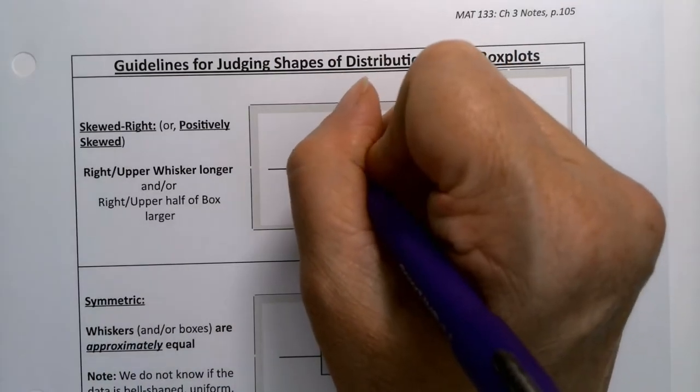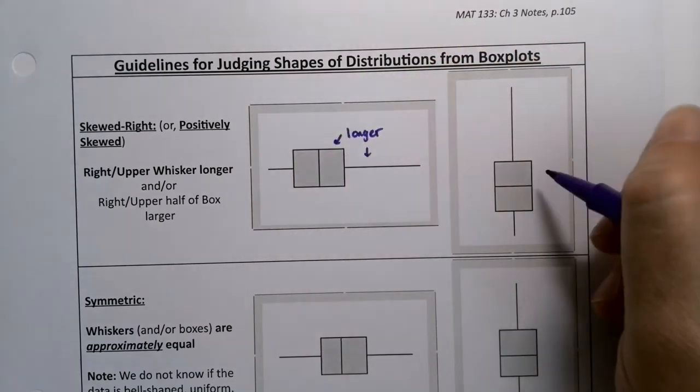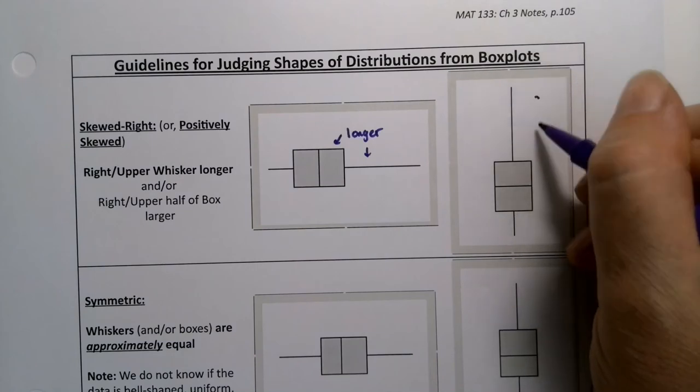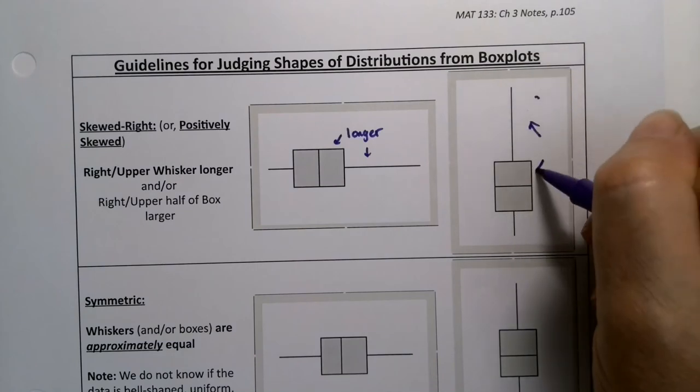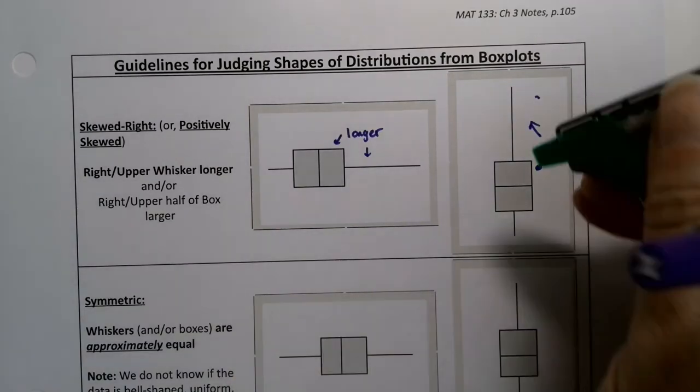In skewed right, these would be longer. Longer on the right side, on the high side, or high side right here. This one or this one should be longer.